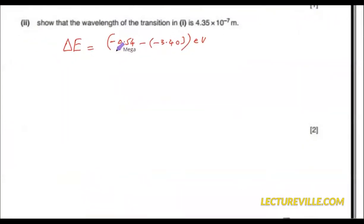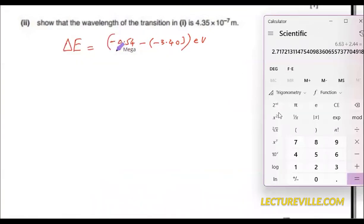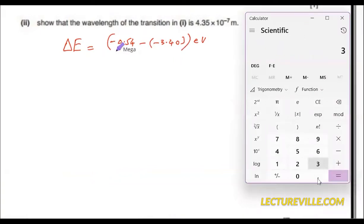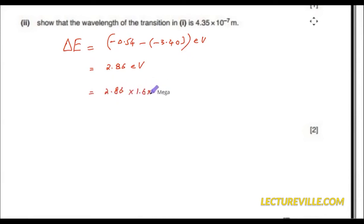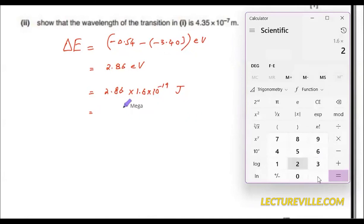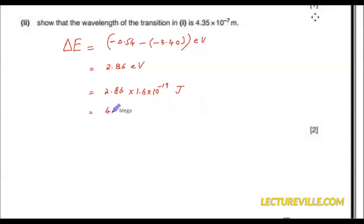Now we have energy and we need to convert it into a wavelength. The same procedure will be followed. It will be 3.4 minus 0.54, which is 2.86 eV. So the energy is 2.86 eV. To convert to joules: 2.86 multiplied by 1.6×10⁻¹⁹, giving 1.6 times 2.86 ×10⁻¹⁹ joules.